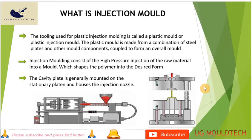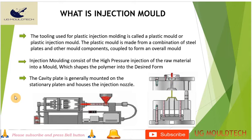The plastic mold is made from a combination of steel plates and other mold components coupled together to form the overall mold. The parts include: cavity, core, spacer, back plate, top plate, register ring, and screws. The cavity plate is generally mounted on the stationary platen, and the core is on the moving side.